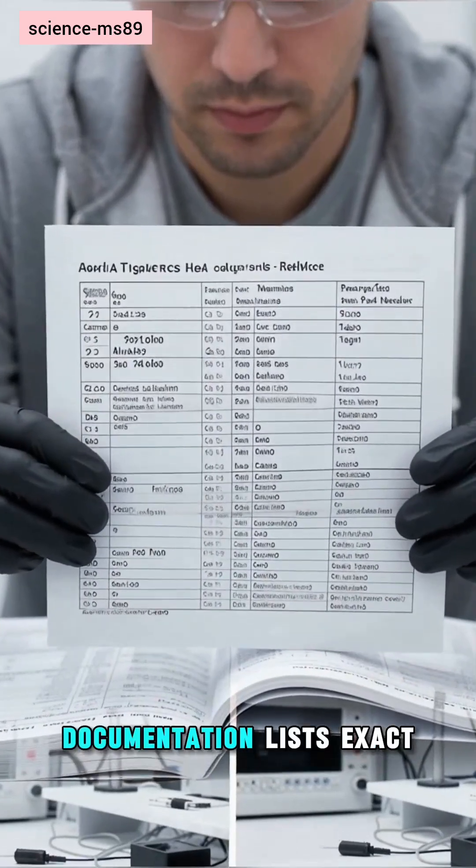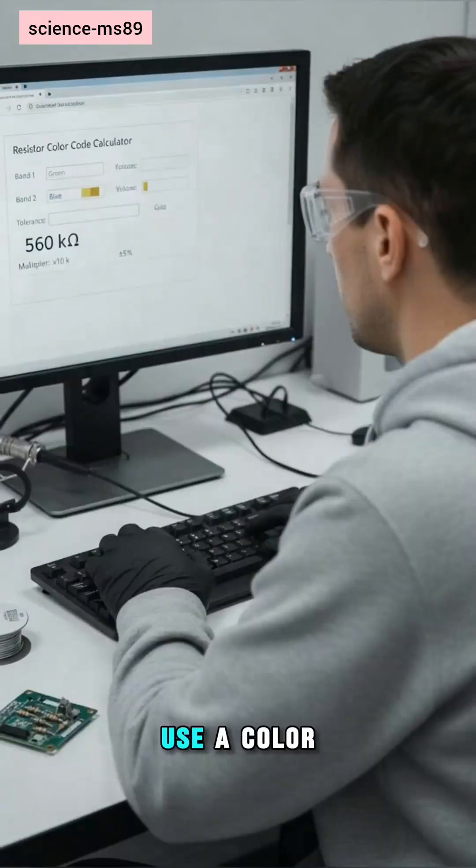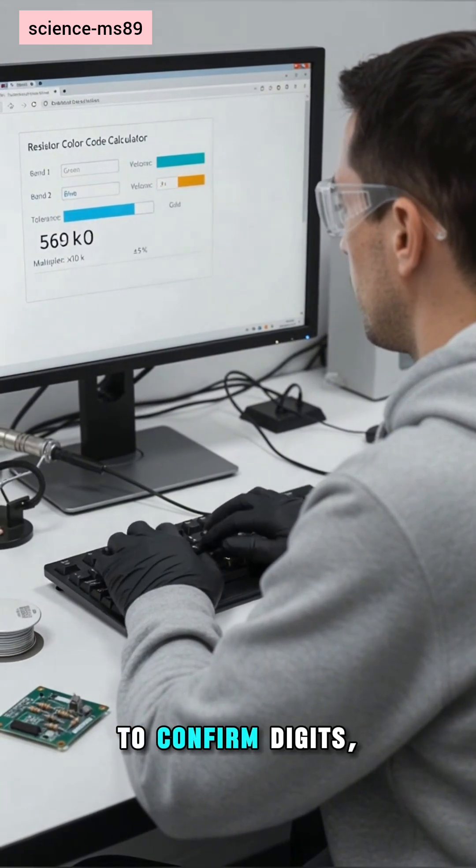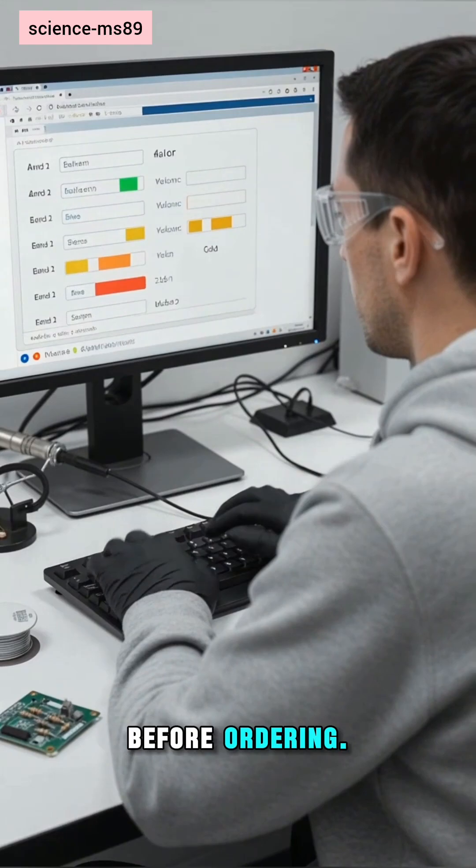Manufacturer documentation lists exact values and tolerances. Use a color code calculator to confirm digits, multiplier, and tolerance. Cross-check before ordering.